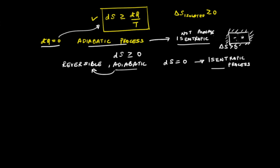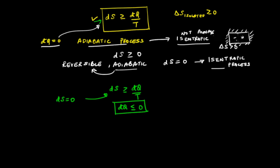We can understand this by considering the inequality ds ≥ dq/T. For isentropic processes, ds = 0, so substituting gives dq ≤ 0. This is the criteria for an isentropic process — this inequality must hold. Equality holds only for a reversible process. So if a process is isentropic and reversible, it must be adiabatic (dq = 0). But if a process is isentropic with dq < 0, we can have an isentropic process that is not reversible.